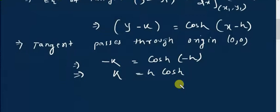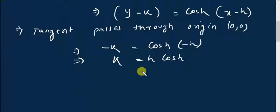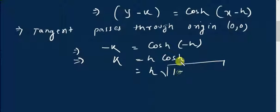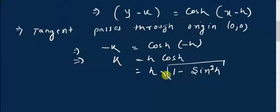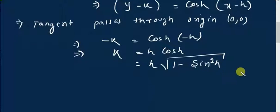We can simplify this further. Since cos h = √(1 - sin²h), we can write k = h · √(1 - sin²h).